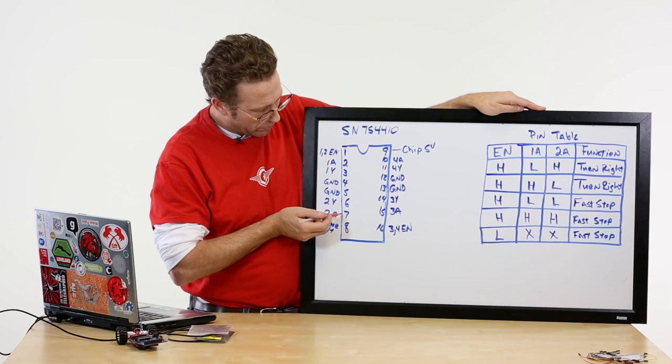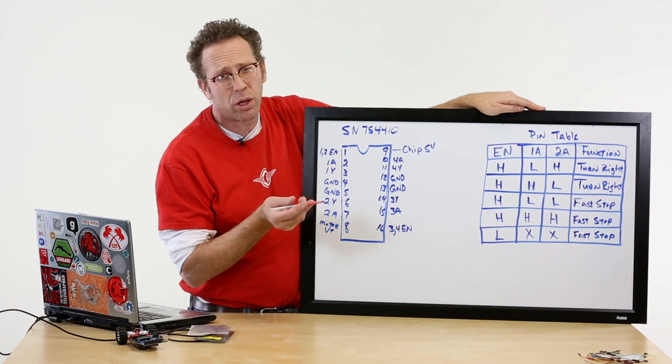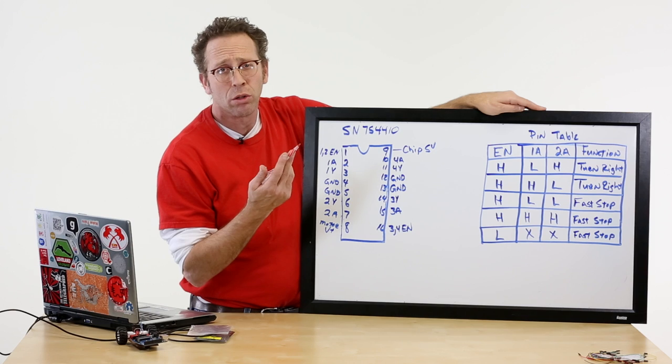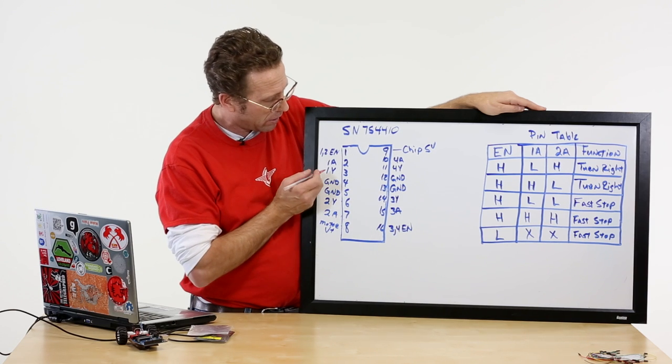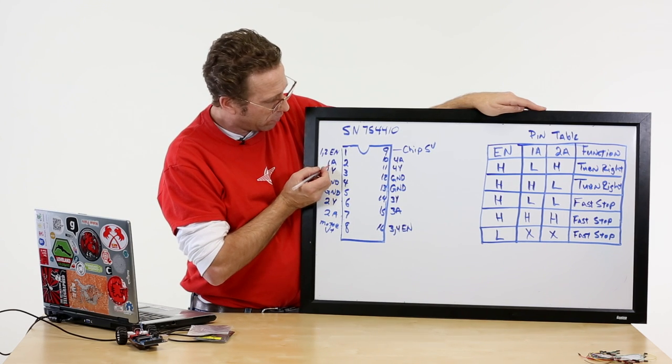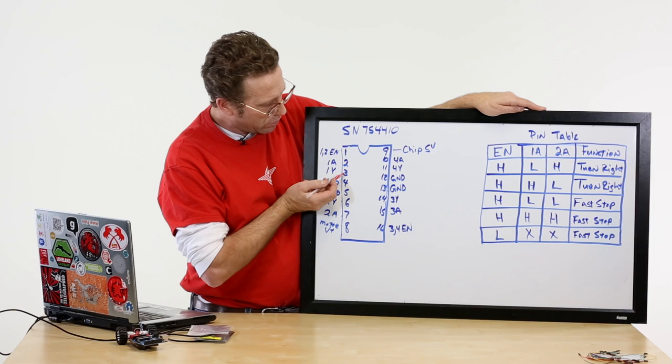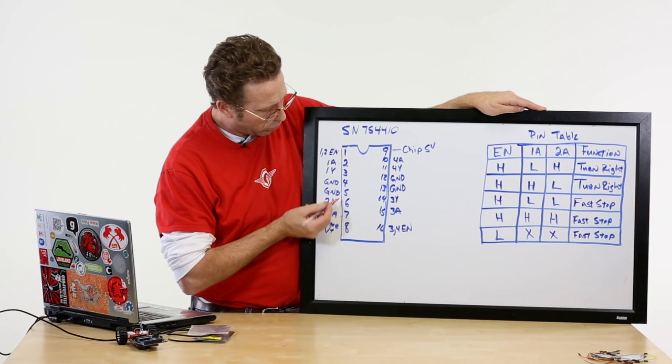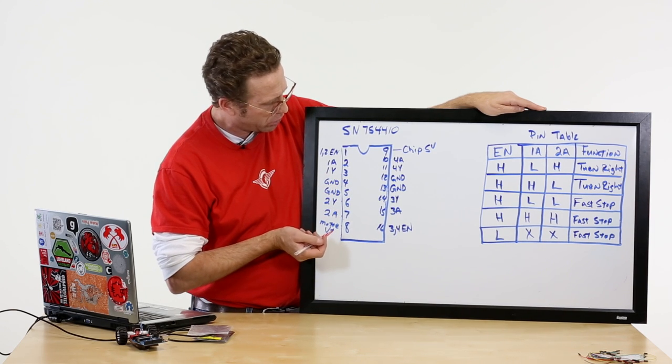I have two pins here that take my motor, and this is all really well documented on the tutorial we've included on the page. My motor's going to hook to 1Y and 2Y right here. These are pins 3 and 6 on the chip.